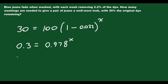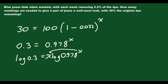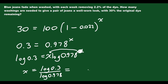Bring the x to the front, then divide both sides by log of 0.978. You get x equals log(0.3) divided by log(0.978), which equals approximately 54 washes. Use your calculator at this step. When I write log, I'm using base 10 — that's the standard.